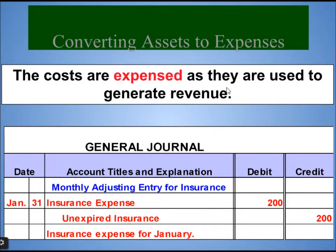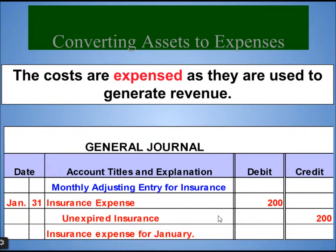Converting asset to expense: the costs are expensed as they are used to generate revenue. The monthly adjusting entry for insurance — for the first month of insurance used — since the per-month amount is $200, the first month's value becomes an expense. The journal entry is: debit insurance expense $200, and credit unexpired insurance $200. The unexpired insurance was an asset, but $200 of it has expired, so we credit it with $200.